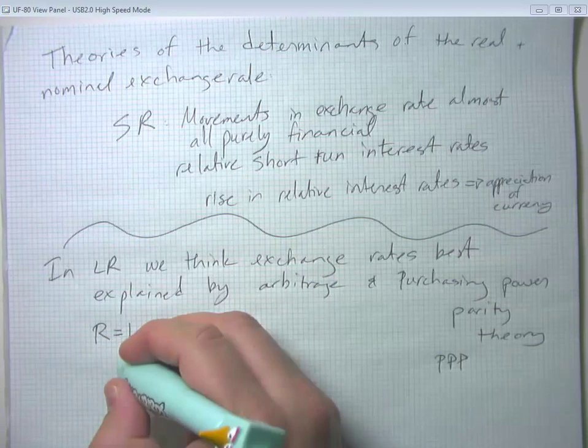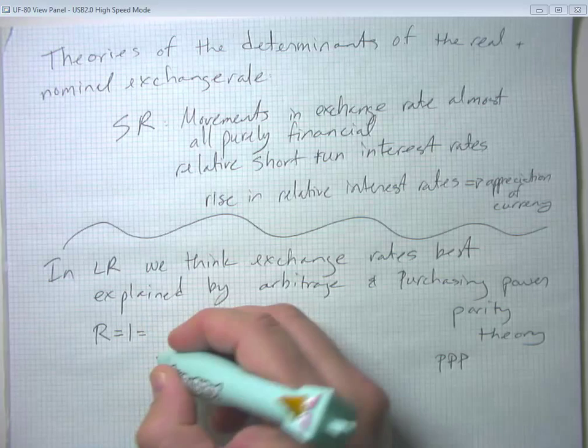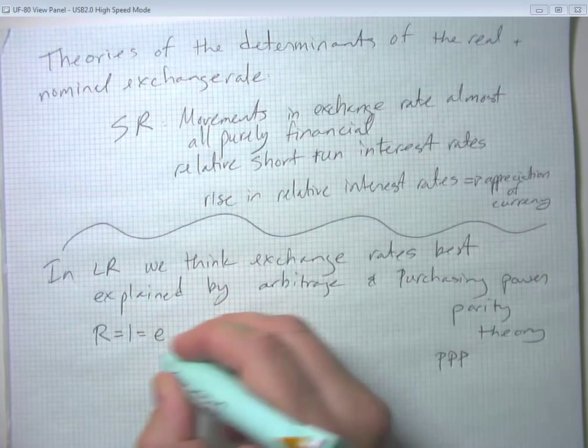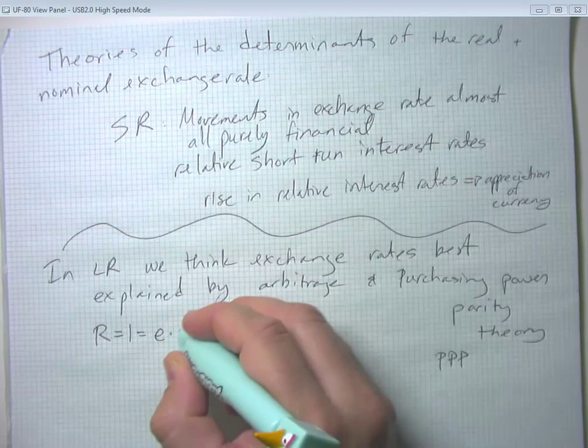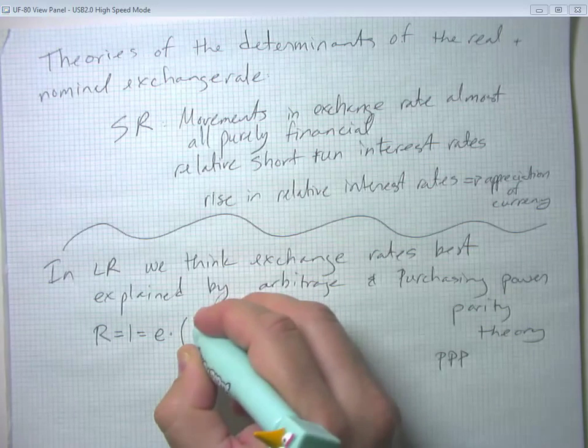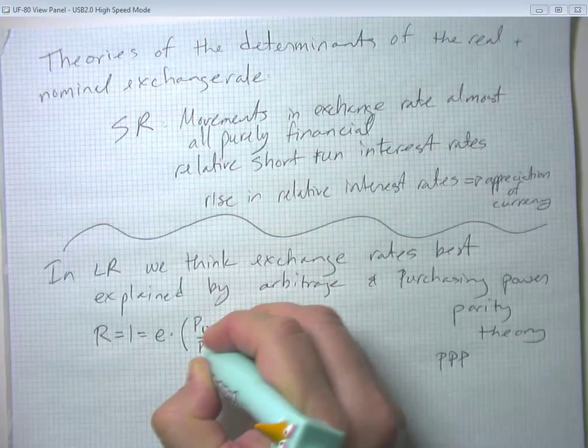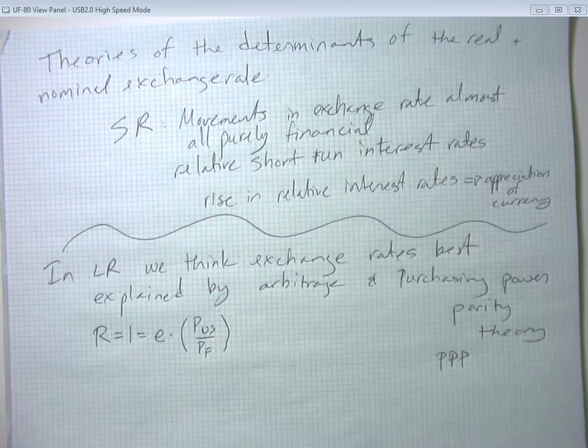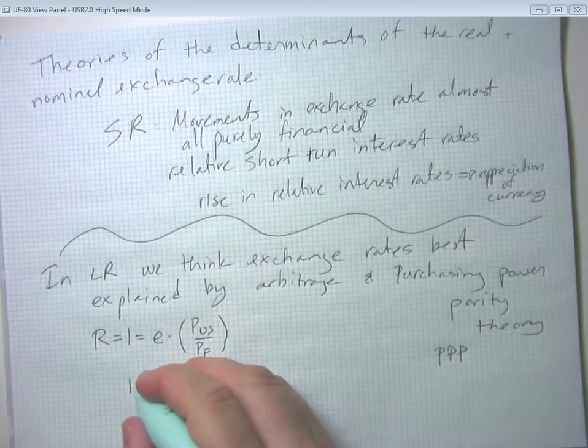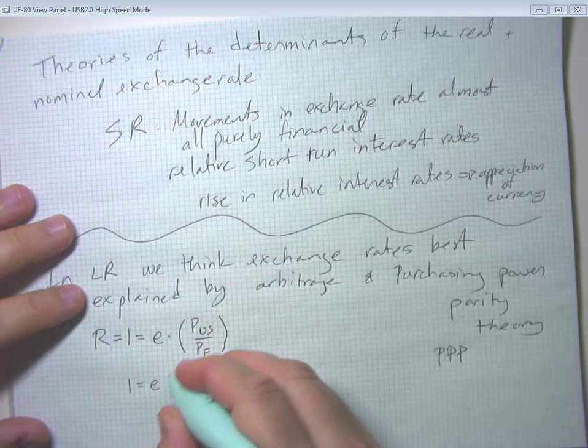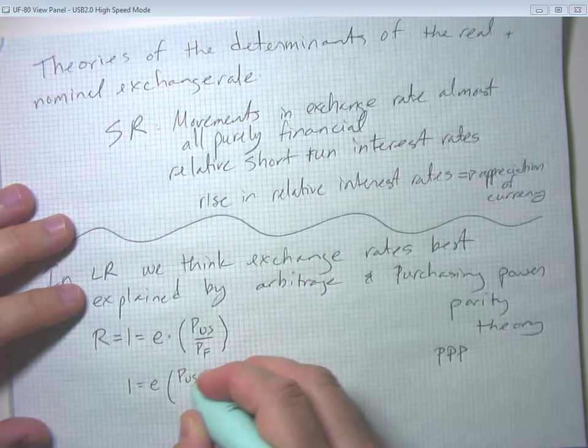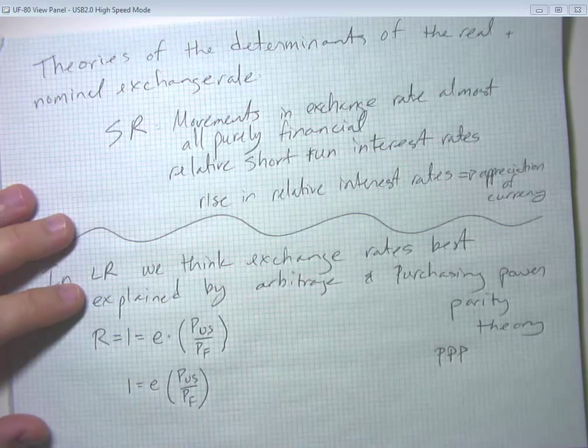Another way of saying this is remember that the real exchange rate is equal to the nominal exchange rate times the ratio of the two price levels. So we're predicting then that the nominal exchange rate times the ratio of these two price levels equals one.